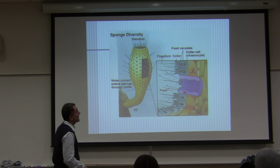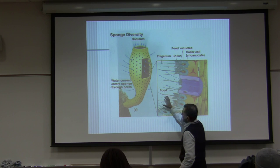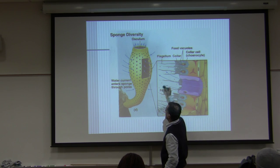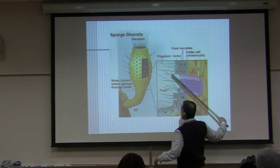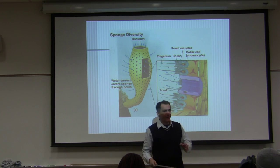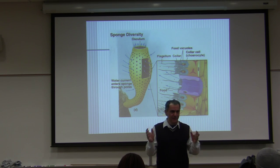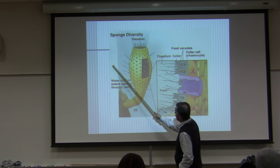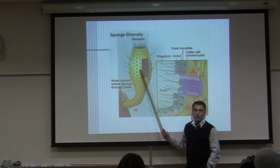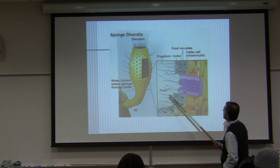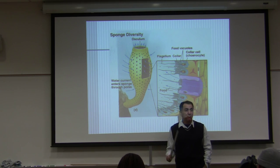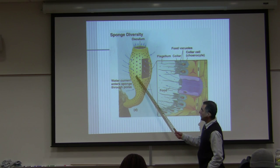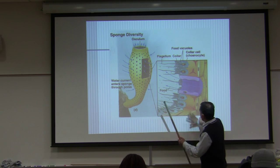Here is the general body plan of sponges. It's like a vase — on the very top is the osculum. Water goes from outside the animal to the inside through pores called ostia. Those pores are called ostium — that's why the name of the phylum is Porifera, meaning they have many pores on the outside of the animal.